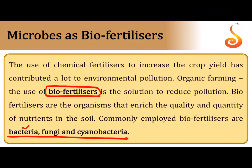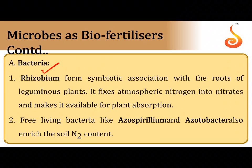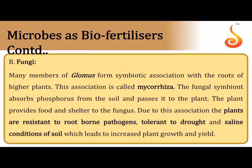Biofertilizers in the form of microorganisms like bacteria, fungi, and cyanobacteria can enrich the nutrient content of soil. Rhizobium enriches the nitrogen content, forming symbiotic colonies in root nodules of leguminous plants (and some non-leguminous plants). Free-living forms like Azospirillum and Azotobacter carry out nitrogen fixation to enrich the nitrogen content of the soil. The fungus Glomus forms a symbiotic association with roots of higher plants called mycorrhiza.